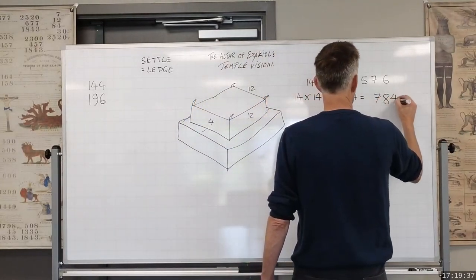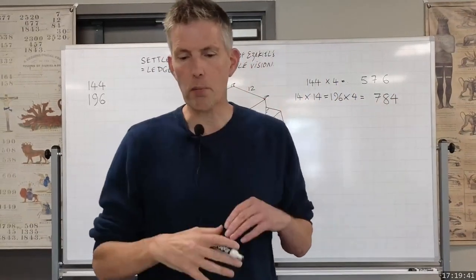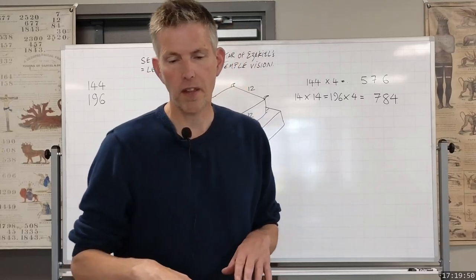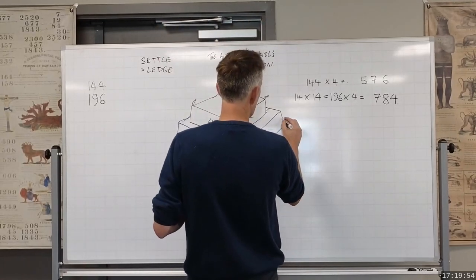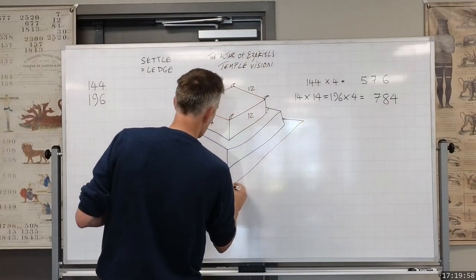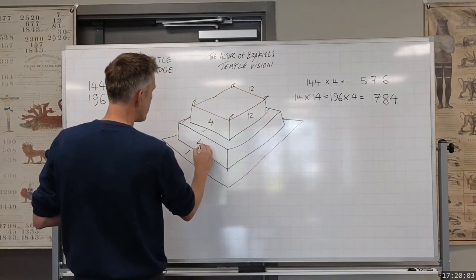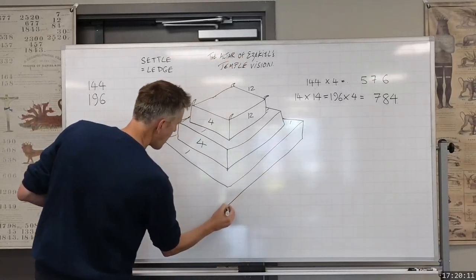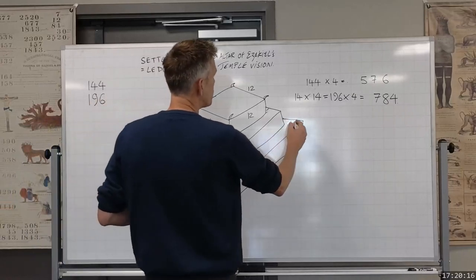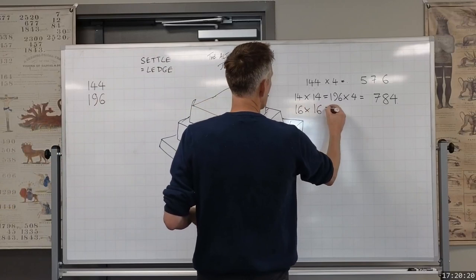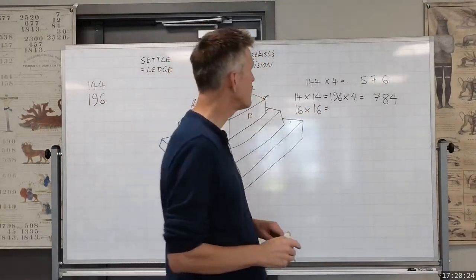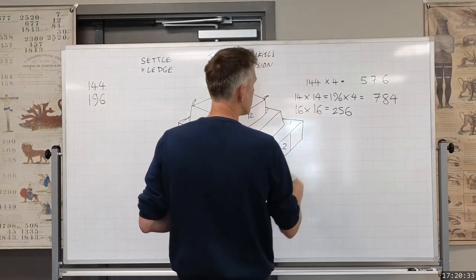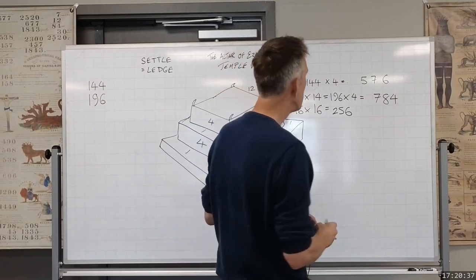Okay and then we had read from the bottom upon the ground even to the lower settle, this is verse 14, shall be two cubits and the breadth one cubit. Okay so you have there another settle, another ledge, which is one cubit so that's going to be four there. And this is one cubit but it's saying it's going to be two cubits in height. So it's going to be one, one either side, so that's going to be 16 by 16. So that's going to be 15 which equals 256. And we're going to multiply out by two because this here is only two cubits, 512. Okay 512.